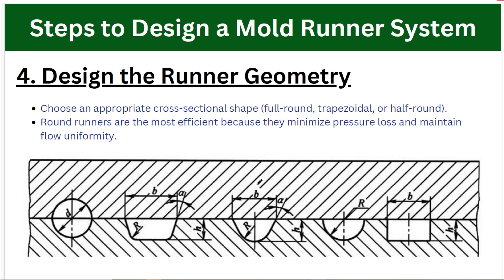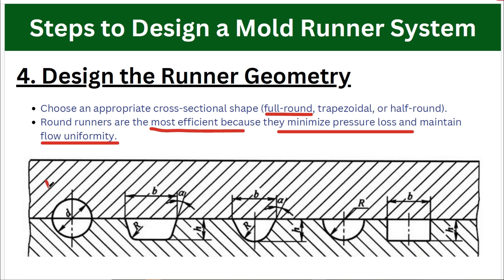There are a number of cross-sectional shapes for the runner — circular, trapezoidal, and half-round. Most of the time, full round or circular runners are used because they are most efficient, minimize pressure loss, and maintain flow uniformity. The half-round shape is machined from each mold half — one half from the first mold half and one from the second — while all other shapes are machined from a single mold half on the cavity side.